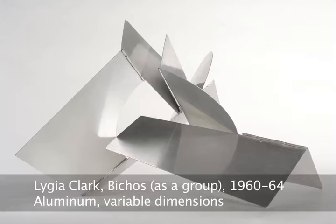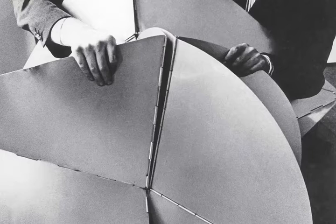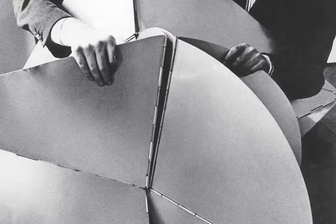Clarke's participatory creations spanned nearly three decades. The rich interactive vocabulary she developed with objects made from very simple materials began with a series of Bichos, or animals, created from 1960 to 1964. These sculptures are hinged metal plates that could be manipulated by the viewer to create various shapes, requiring active participation in order to reveal their organic nature and unfold their multiple configurations.